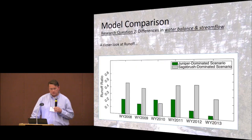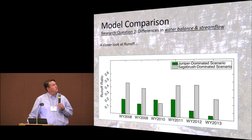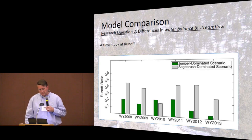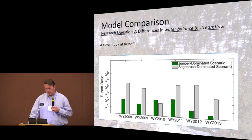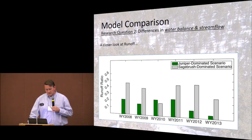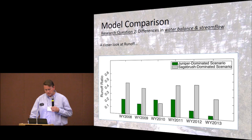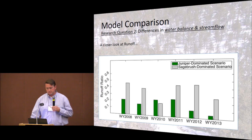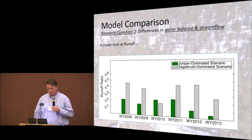Looking at runoff, with green bars representing the juniper scenario and gray bars representing sagebrush, this further illustrates that for the sagebrush condition we see a much higher allocation of water towards stream flow than when the site is dominated by trees. This pattern holds across the six different water years modeled.